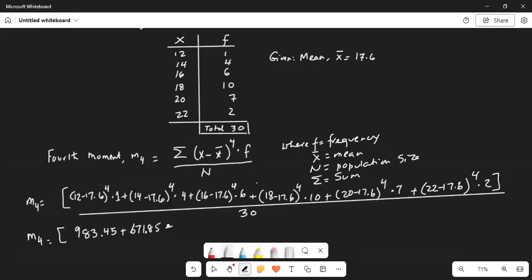Next one. 16 minus 17.6 exponent it to 4 and then multiply it by corresponding frequency which is 6. So it is 274.19. Next one. 18 minus 17.6 exponent it to 4 and then multiply it by corresponding frequency which is 10. It is 0.256.